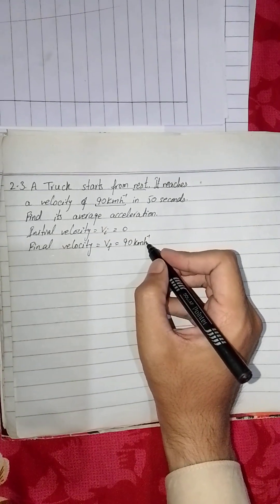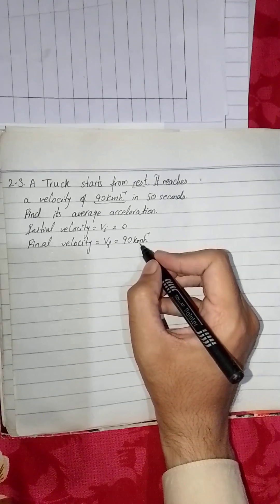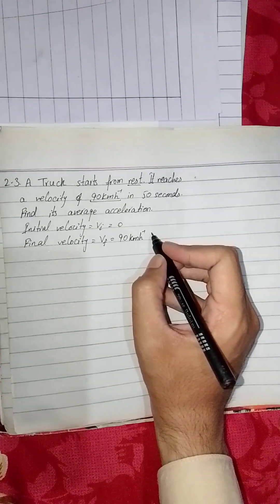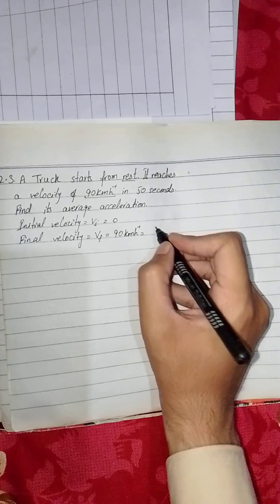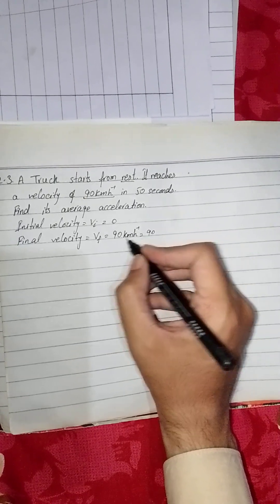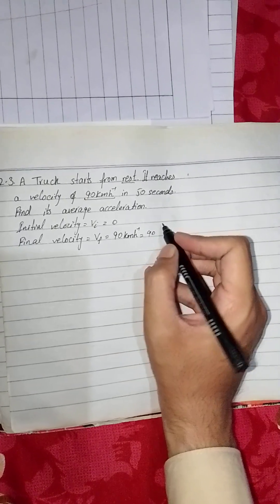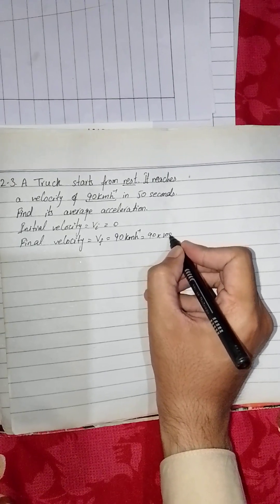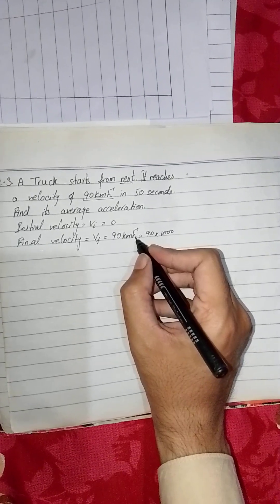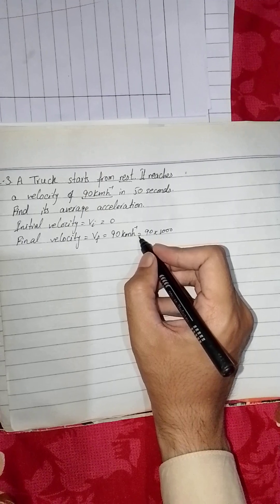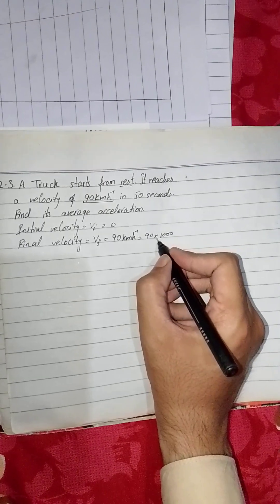Here we change its unit to SI units, km per hour to meter per second. For this, for changing kilometer into meters, we multiply by 1000, and one hour has 3600 seconds, so here we divide by 3600.